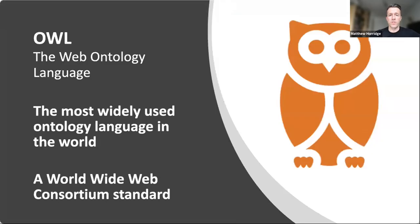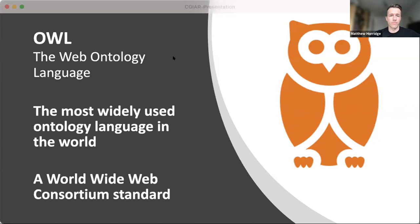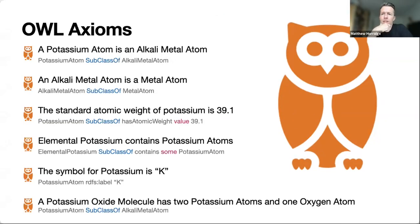Web Protégé works with a language called OWL — the Web Ontology Language — the latest standard and most widely used ontology language in the world. An OWL ontology is simply a set of statements, which we call axioms. For example, from a chemistry ontology: 'A potassium atom is an alkali metal atom' and 'An alkali metal atom is a metal atom' — these are subclass-of axioms, saying one class is a more specific class of another. A class is a representation of a set of things that have something in common.